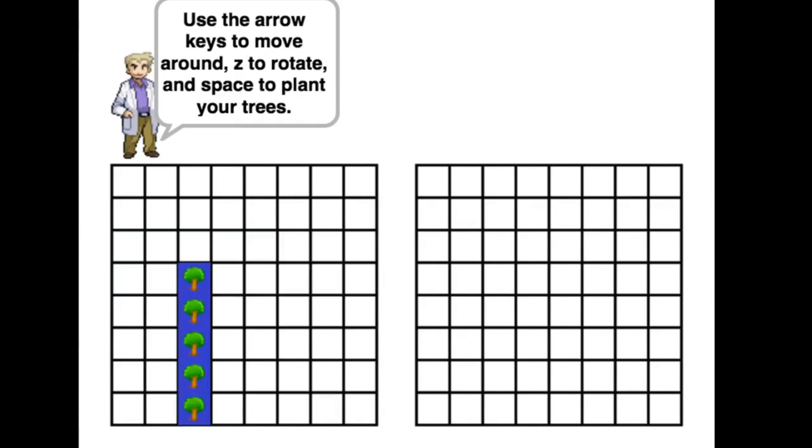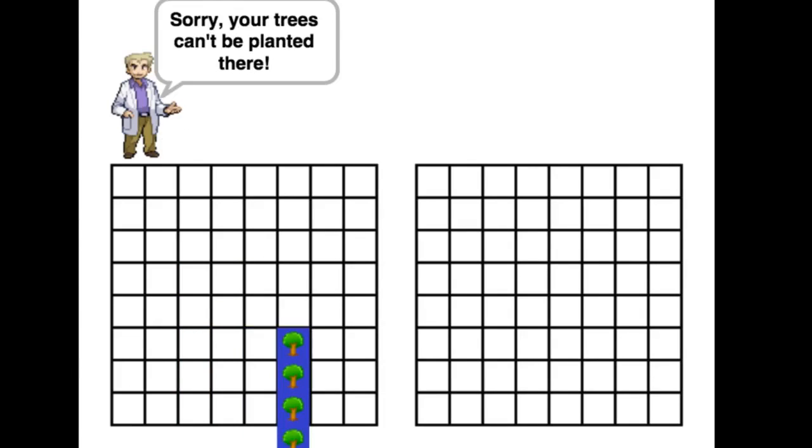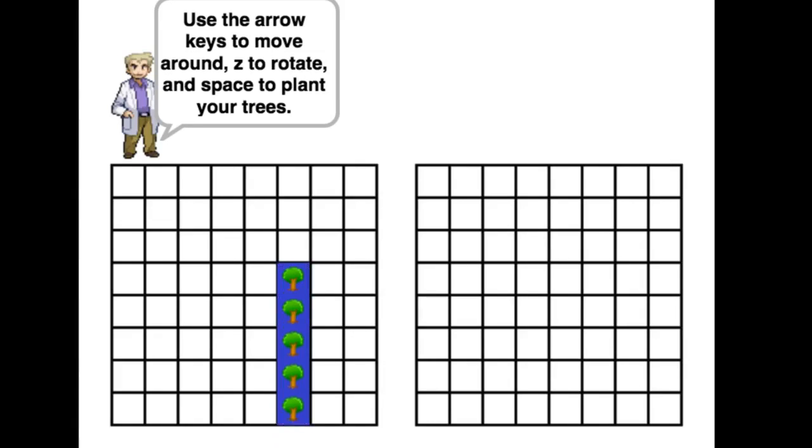You use the arrow keys to move around, Z to rotate, and space to plant the trees. You can't plant trees outside of the game board or over other trees.